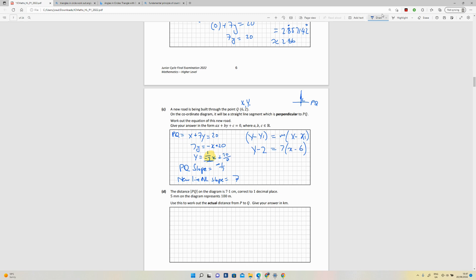Simplifying that, y minus 2 equals 7x minus 42. And then I'm going to go to y equals 7x, plus the 2 bringing it across, so that's going to be minus 40.